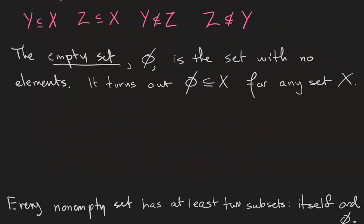The empty set, which is denoted with the circle with the line through it - make sure you're not writing your zeros this way, this is not a zero. The empty set is the set that has no elements. A surprising fact about the empty set is that it's actually a subset of every set X. Here's an idea as to why.